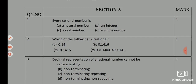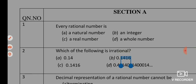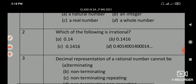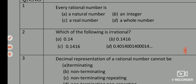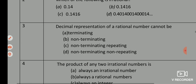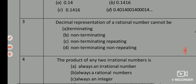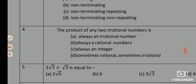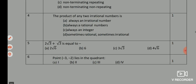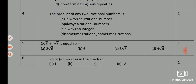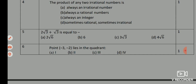Section A: Q1 — correct answer is option C, real number. Q2 — correct answer is option D. Q3 — correct answer is option D, non-terminating, non-repeating. Q4 — correct answer is option D, sometimes rational, sometimes irrational. Q5 — correct answer is option C, 3√3. Q6 — correct answer is option C, 3rd.